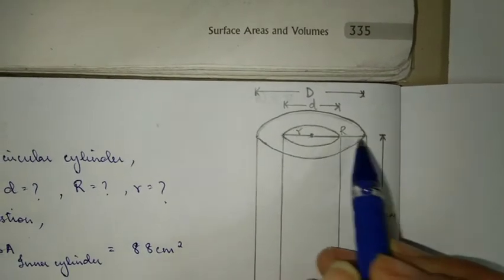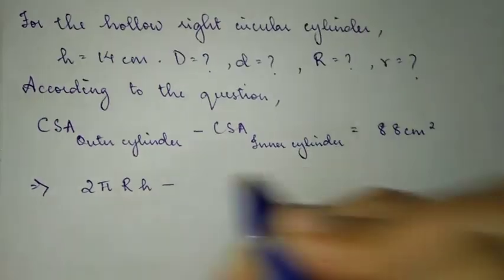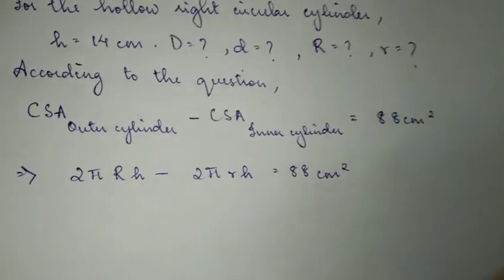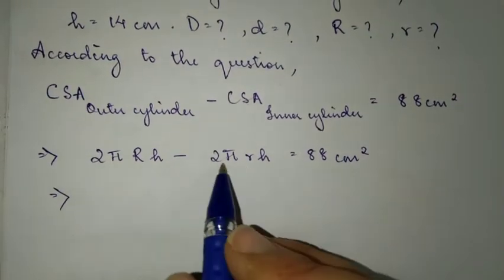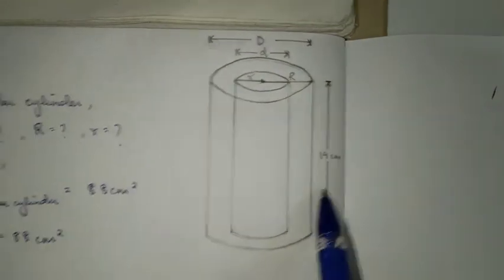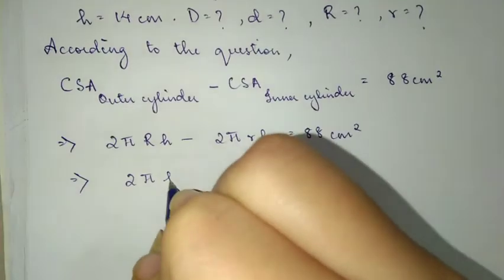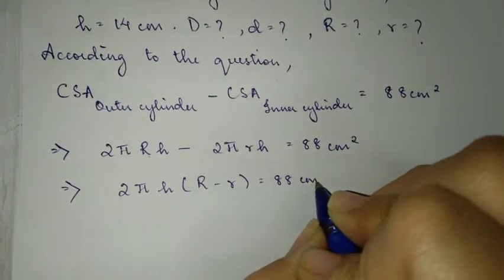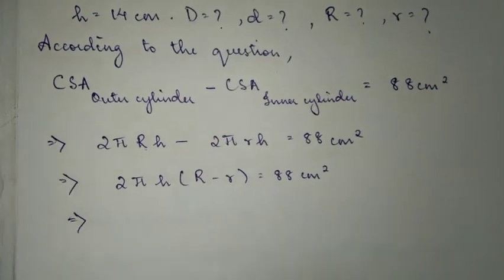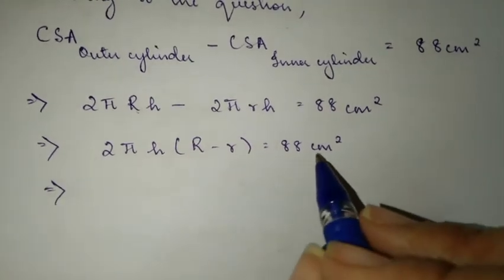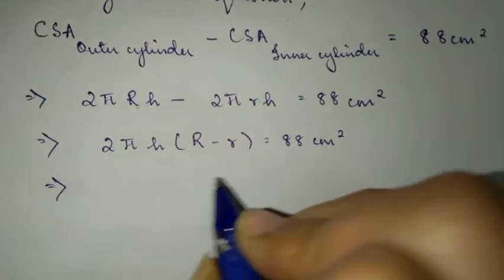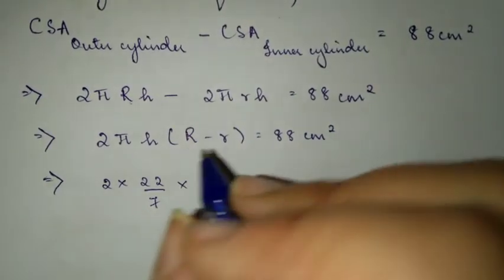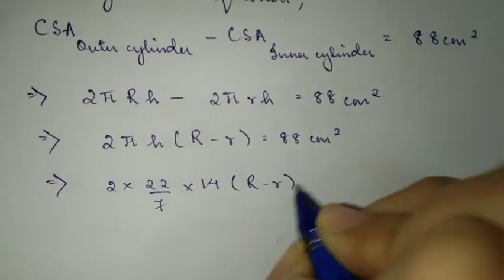So the formula: the outer cylinder curved surface area is 2πRh minus 2πrh equals 88 cm². Now, substituting 2π and h. We have 2 times 22/7 times 14 times (R - r) equals 88.